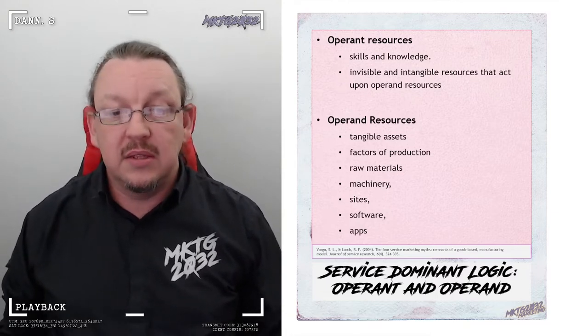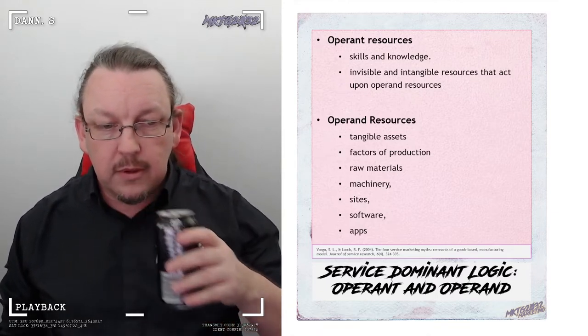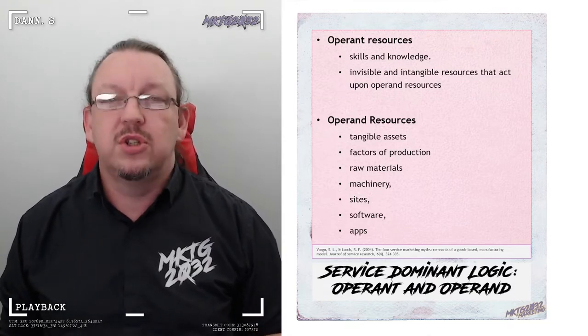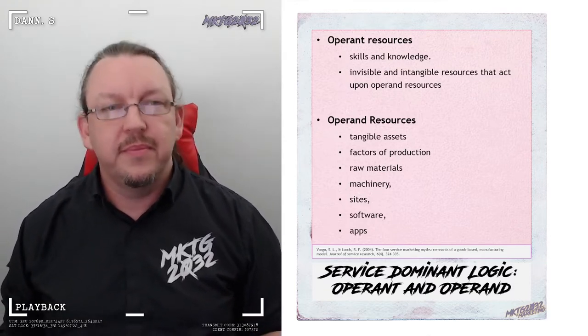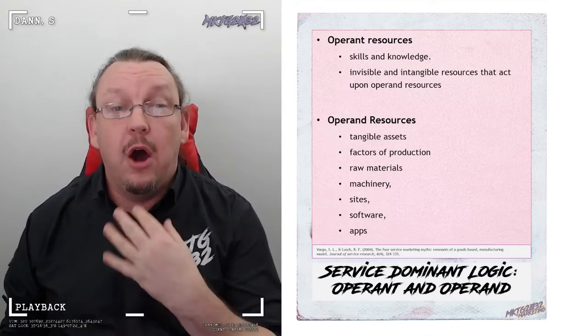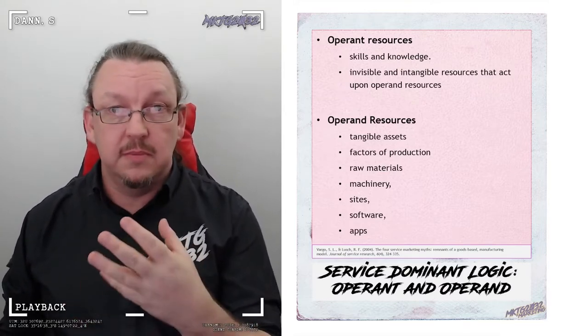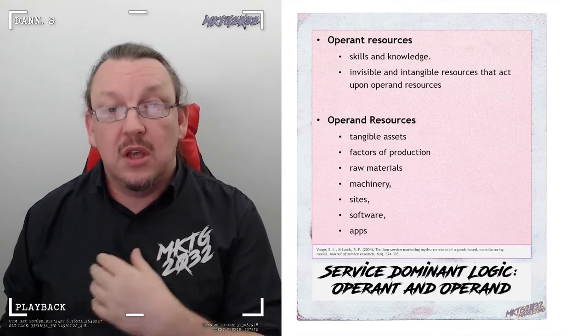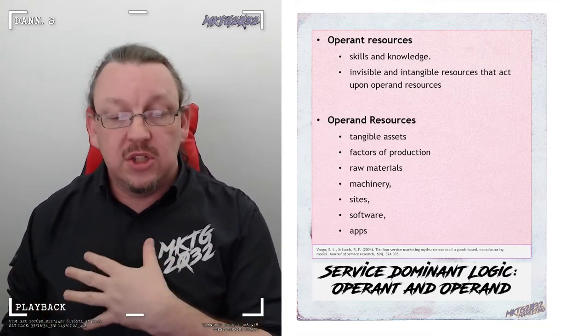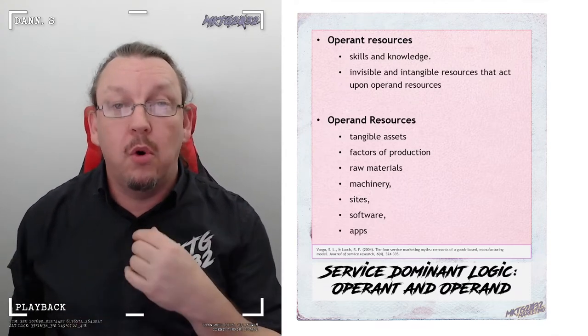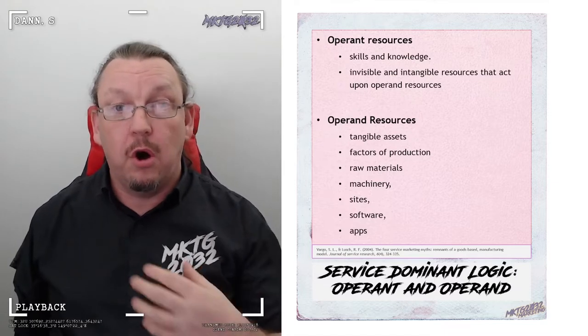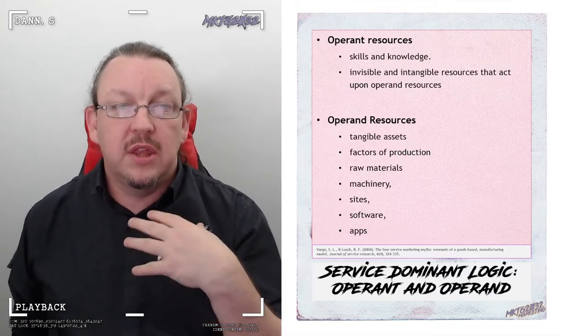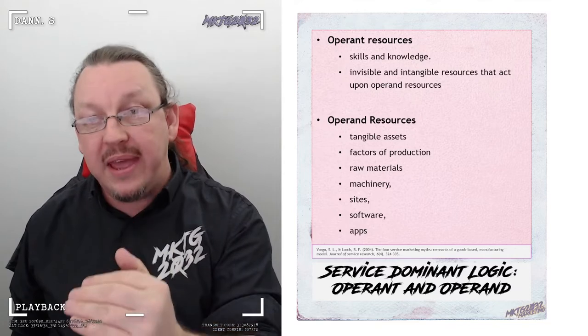The next thing we want to address in this is in Service Dominant Logic, there are two ideas. And they've got one letter separating them because Vargo and Lusch thought this through and did it anyway. On the front end, we have the operant resources. These are embedded in our customer. This is where the co-creation value is tying into ideas such as access and ideas such as what does the customer need to be able to do in order to get value from your product or your offering. So the operant resources are the skills and knowledge.